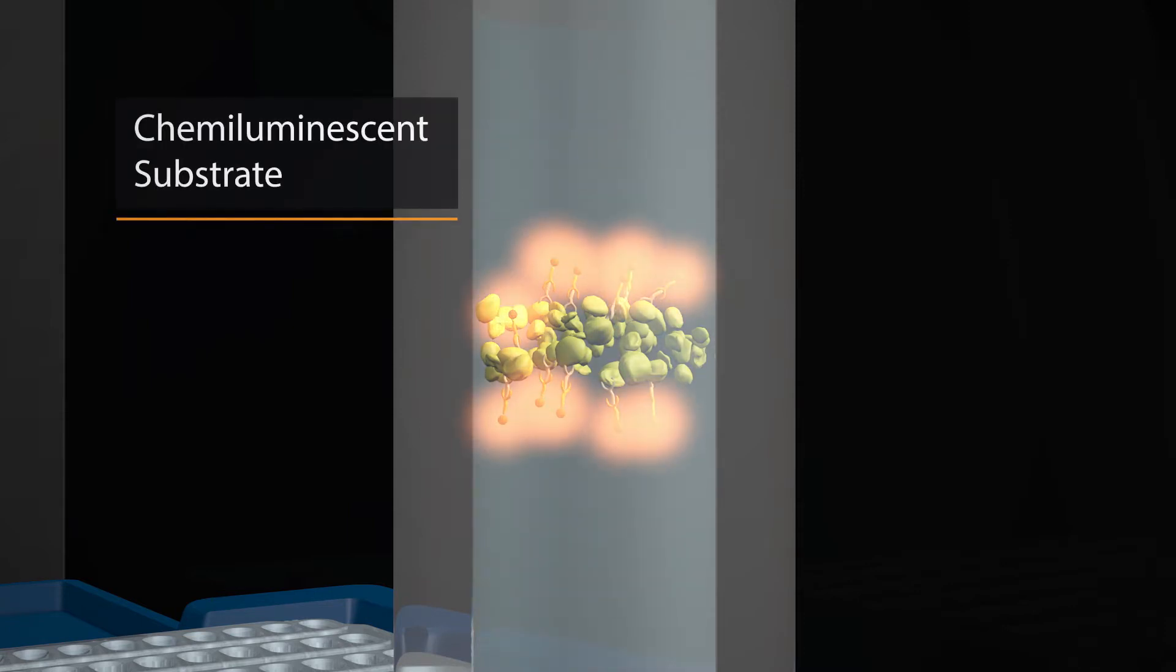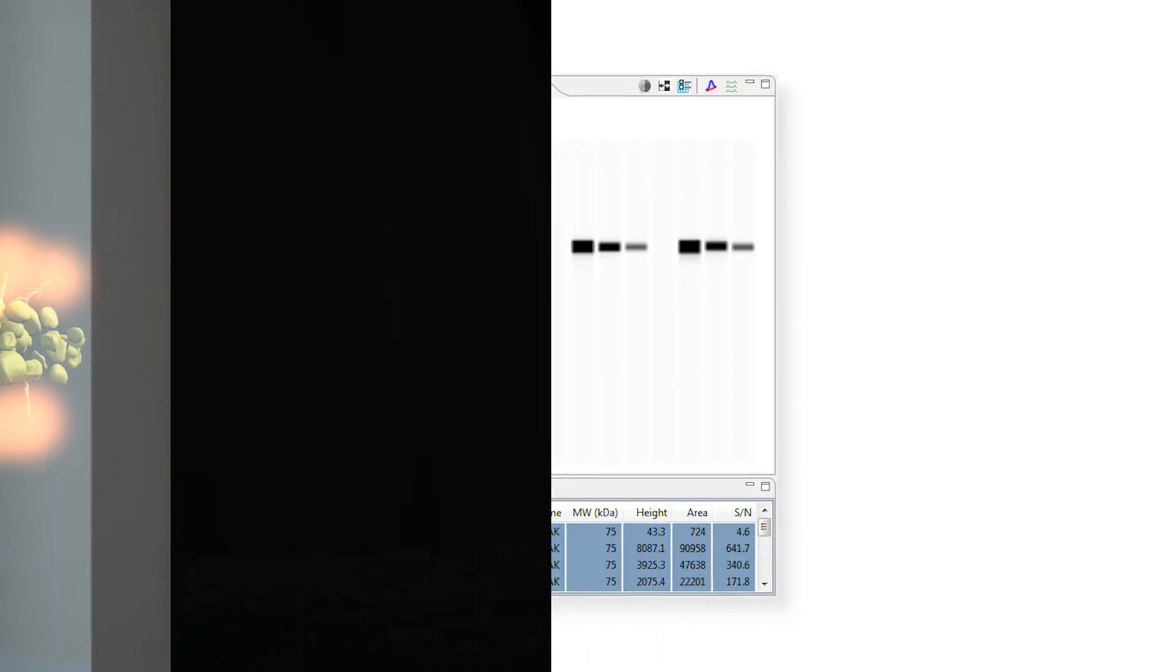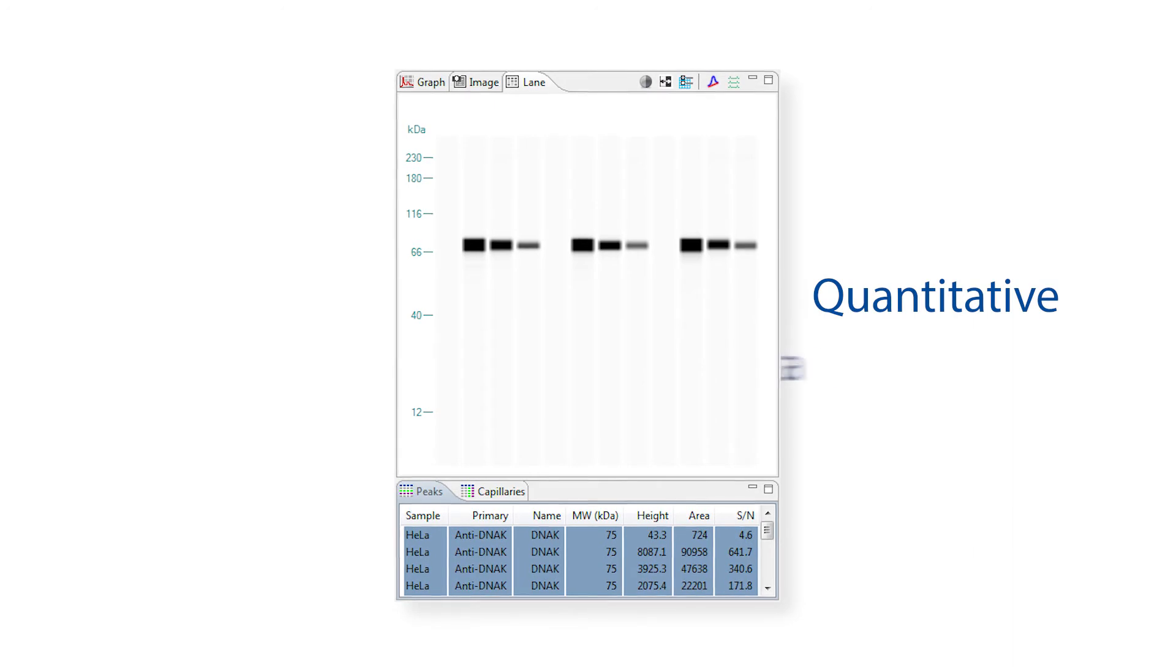The chemiluminescent reaction gives off light that is recorded by a CCD camera in a series of images over time, with fresh substrate added before each exposure. Three hours later, you'll get quantitative size-based data.